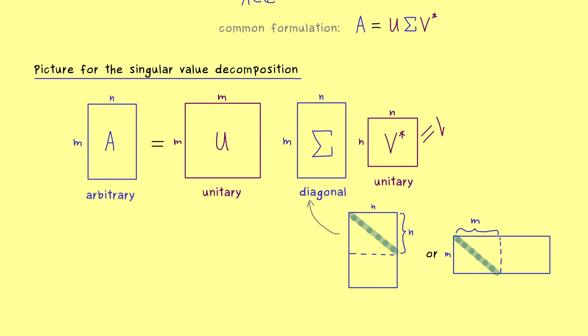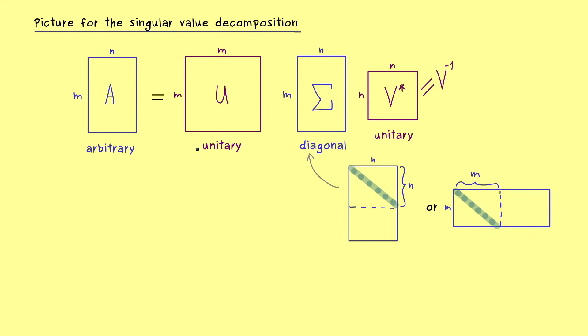So more precisely, we know that V star is equal to V inverse. And this implies that A and sigma are definitely equivalent matrices. So in general we don't have the similarity, but we have the equivalence of both matrices.